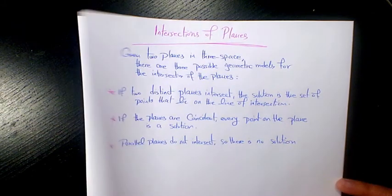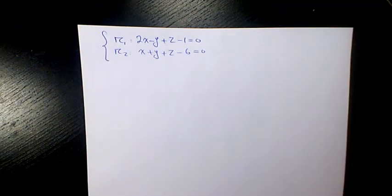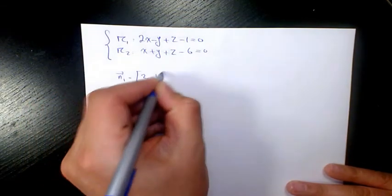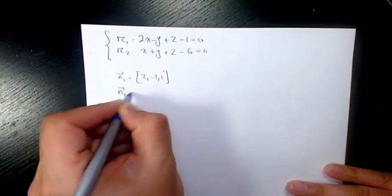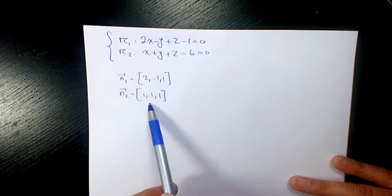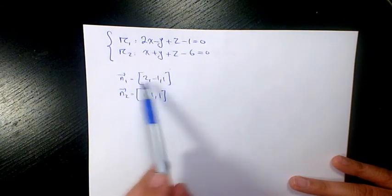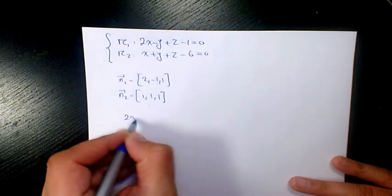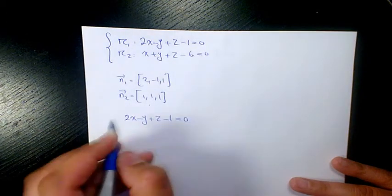Let's see the first example. Plane one is 2x minus y plus z minus 1 equals zero. The second plane is x plus y plus z minus 6 equals zero. The normal of the first one is (2, -1, 1) and the normal to the second one is (1, 1, 1). They are not parallel, because one is not a multiple of the other, so they must intersect.